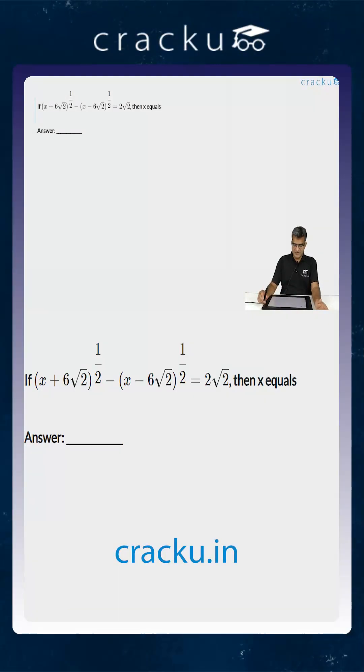In this question we are given an expression and we are asked to calculate the value of x. We are told that square root of x plus 6 root 2 minus square root of x minus 6 root 2 is equal to 2 root 2.